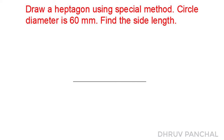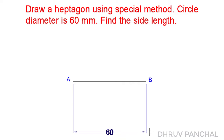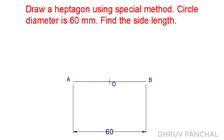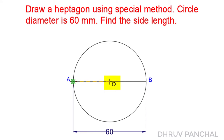Draw a straight line AB having length equal to 60 mm and mark the midpoint as point O. Now with the help of a compass, draw a circle with point O as center and 30 mm radius.